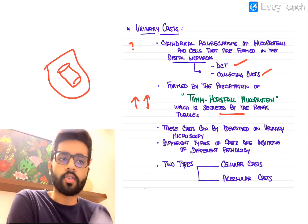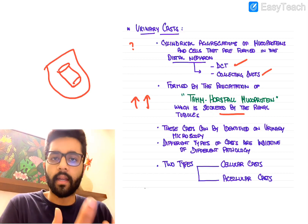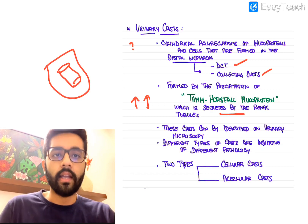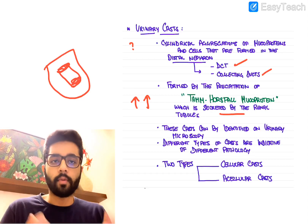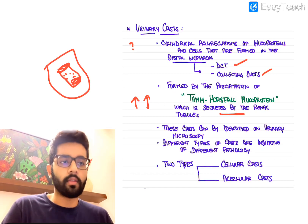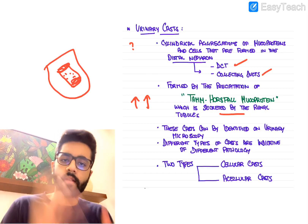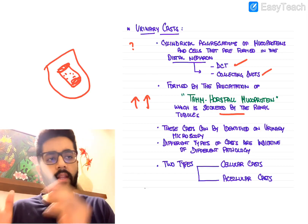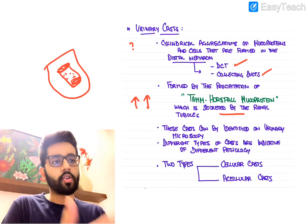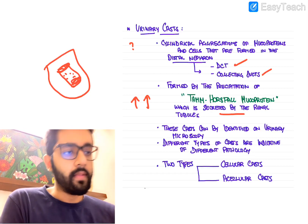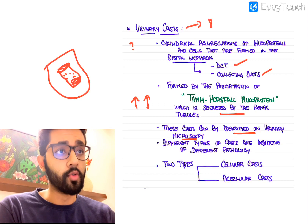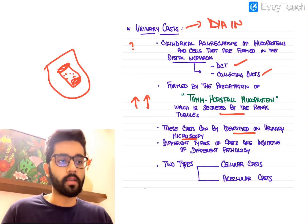In some conditions, these Tamm-Horsfall proteins will precipitate within the urine and within the ducts — particularly the DCT and collecting duct — leading to formation of cylindrical aggregates. Sometimes cells may also be incorporated into these aggregates depending on the disease. They can be identified on urinary microscopy and are hence a useful diagnostic tool.